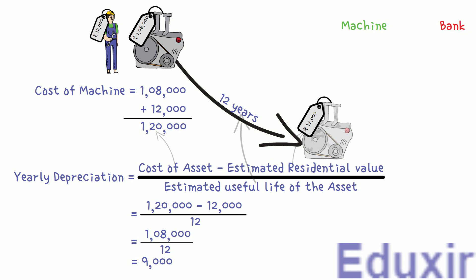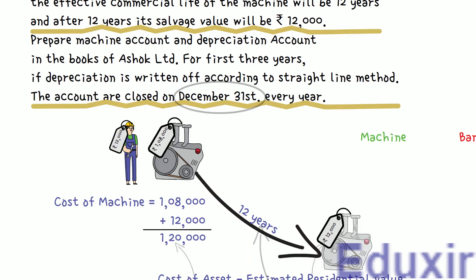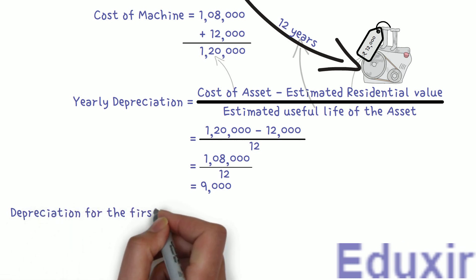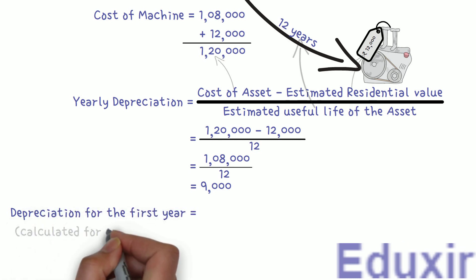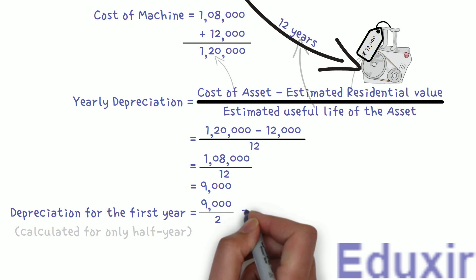As the machine is purchased on July 1st and the accounts are closed on December 31st, for the first year we need to consider depreciation only for 6 months, not for the full year. For subsequent years, the depreciation is considered for the entire year. So the depreciation for the first year, calculated only for half a year, will be ₹9,000 ÷ 2 = ₹4,500.